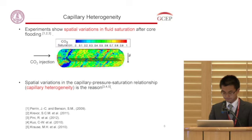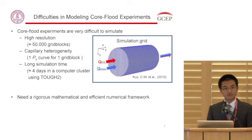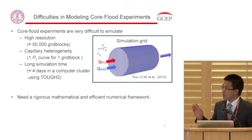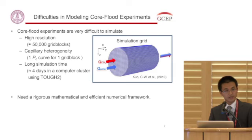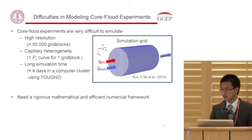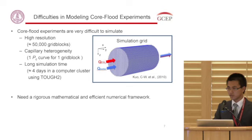Performing these core flood simulations is very difficult. First, it has high resolution — a typical simulation grid has over 50,000 grid blocks. We also need to account for capillary heterogeneity, meaning each simulation grid block has its own capillary pressure curve — so over 50,000 capillary pressure curves. The simulation time is also very long. Using our previous simulator TUF2, each simulation took roughly four days to finish on a computer cluster.